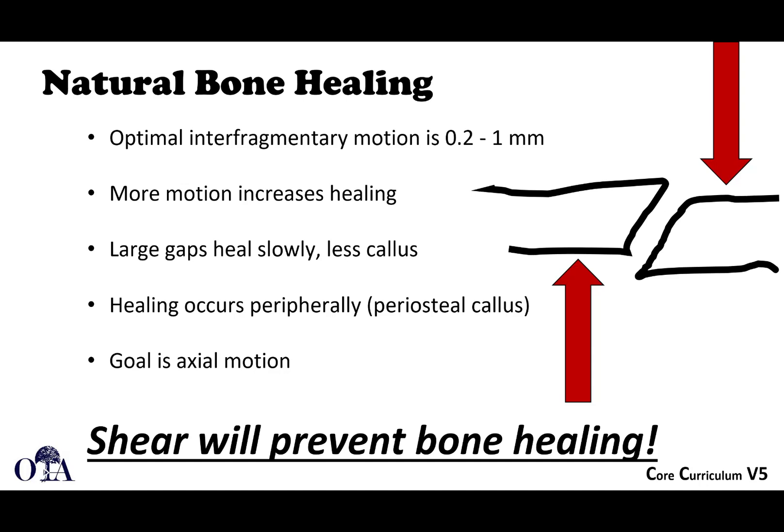Optimal interfragmentary motion is 0.2 to 1 millimeter. If a bone cell forming bone is experiencing more motion than that, it can potentially disrupt healing. Too little motion can also be a problem, so there is a balance. Healing typically occurs peripherally, starting with a hematoma and periosteal callus formation. Importantly, shear — remembering that bone is weakest under shear — can really prevent bone healing. As shown by Perren's strain theory, shearing can lead to instability that prevents bone from forming, resulting in only soft tissue formation.